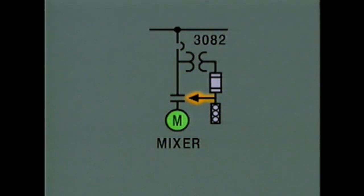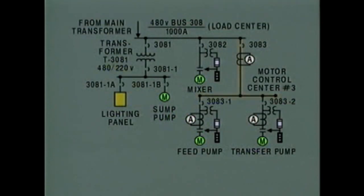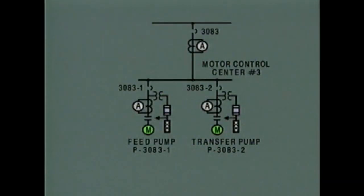The arrow indicates that the start-stop switch operates the contactor to start or stop the motor. The last circuit connected to the load center supplies power to a motor control center. The first component in this circuit is a circuit breaker, which can be opened to isolate and de-energize the entire motor control center.